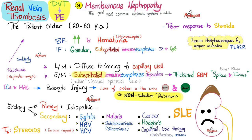Membranous nephropathy: sub-epithelial immune complex deposition, thickened glomerular basement membrane, spikes and domes pattern, and proteinuria. Don't forget the thrombosis — especially in the renal vein — because with the protein lost, we also lost antithrombin 3, so we get thrombosis in the closest vessel, which is the renal vein. Associations include syphilis, hepatitis, lupus, malaria, and others.